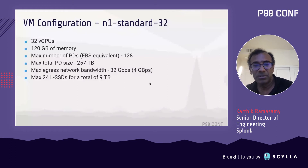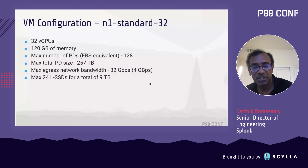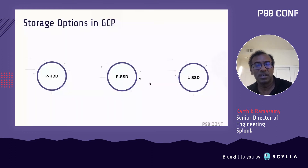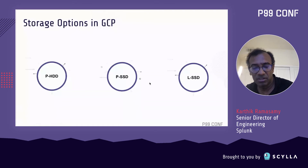There are multiple storage options in GCP that we evaluated for 10 petabyte performance scaling. PHDD refers to persistent hard disks, PSSD refers to persistent SSDs where Google manages and automatically replicates the disks, and local SSDs are ephemeral — if the VM goes down, the data is lost.